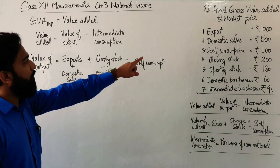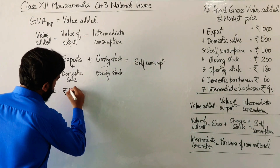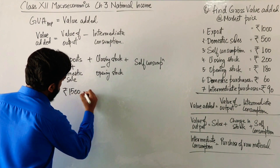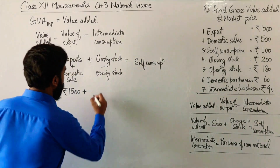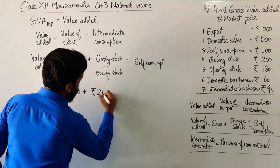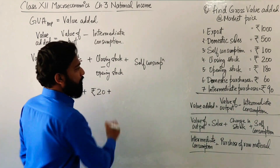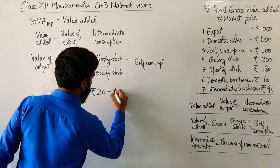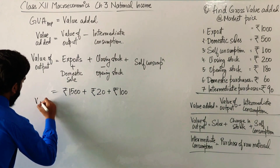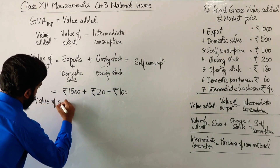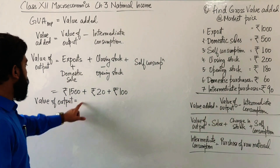So exports 1000, domestic sales 500 — it will be rupees 1500. Plus closing stock 200 minus opening stock 180, it will be rupees 20. Now self-consumption is rupees 100. So the value of output is rupees 1620.